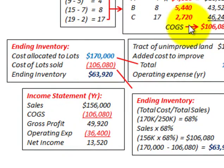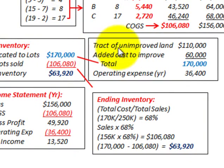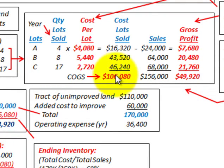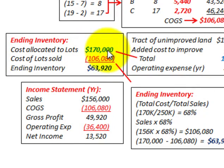Now let's calculate ending inventory. We start with the total cost allocated to the lots of $170,000 — that's $110,000 for unimproved land plus $60,000 in improvements. We subtract the cost of lots sold of $106,080, and the difference gives us ending inventory of $63,920.